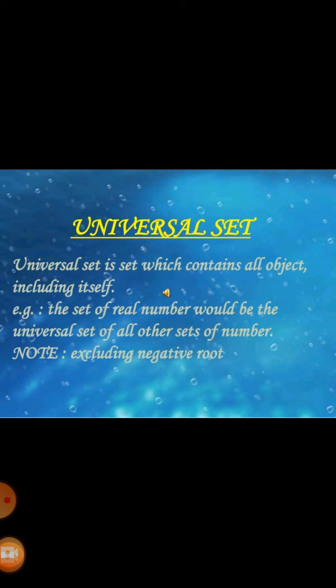Next we discuss universal set. A universal set is a set which contains all objects including itself. For example, the set of real numbers would be the universal set of all other sets of numbers.